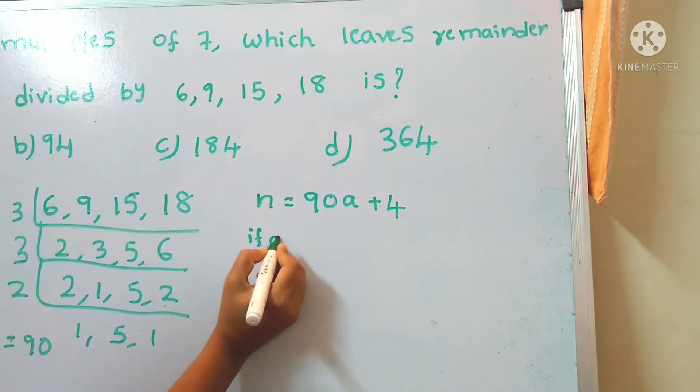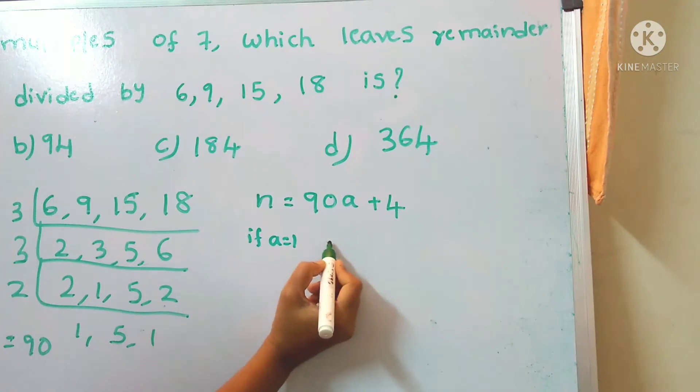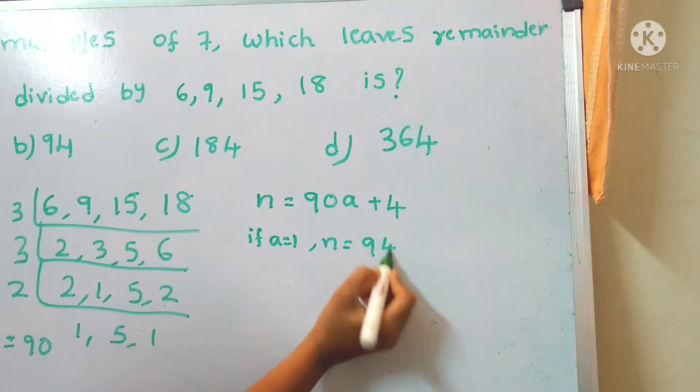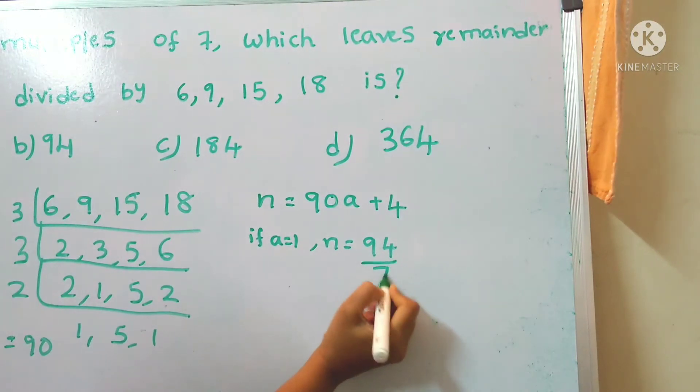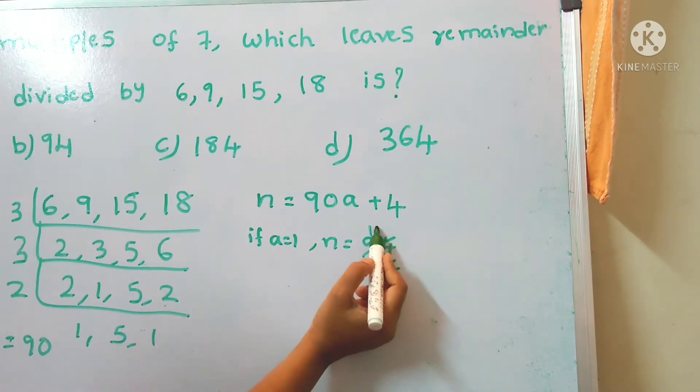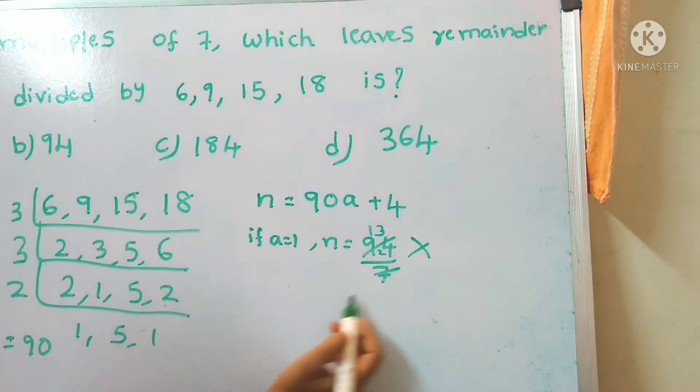If a equals to 1, then n equals to 90 plus 4, that is 94. Let's check if it is divisible by 7 or not. 7 times 1 is 7, and 2, that is 7 times 3 is 21. It is not divisible by 7, so it is not the multiple of 7.